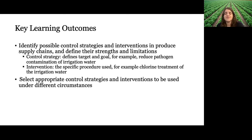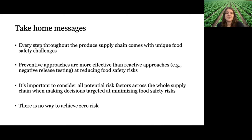Take-home messages: First, every step throughout the produce supply chain comes with unique food safety challenges. Another important one is that preventative approaches are more effective than reactive approaches at reducing food safety risks. This is important because there's often an assumption focused on testing — if you make your product and test it at the end and the tests come back negative for pathogens, you have a safe product. Unfortunately, it's not necessarily that easy.